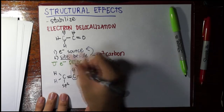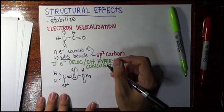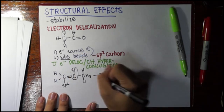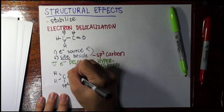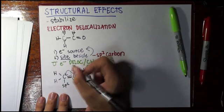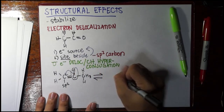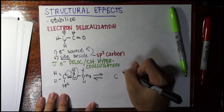This is sp2, we have the site—check. Beside it is a sigma bond, a CH bond—check. So this can delocalize. How does this happen? Well, the electron here moves here, then this pi bond has nowhere to go because what happens is if this electron moves here.